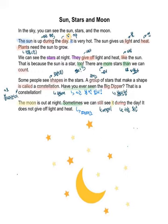The sun is up during. During is 무엇하는 동안. Day means 낮 and 하루. Right? But here, it's 낮. And it is the sun. Right? The sun is very hot. The sun gives us light, 빛 and heat, 열. Plants, 식물, 식물들 here, need the sun to grow.